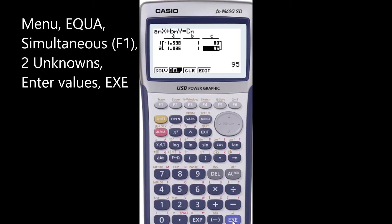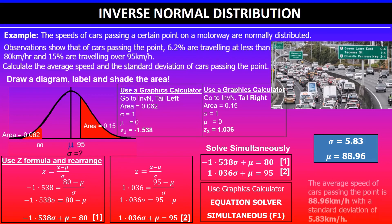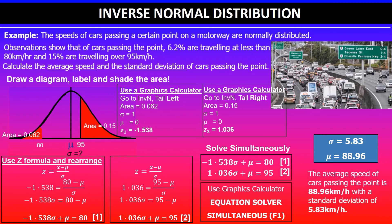Once the values are entered, click Execute to get the results. The X value is your standard deviation, which is 5.83, and the Y value is the mean value, which is 88.96. Write the answer in context: the average speed of cars passing the point is 88.96 kilometers per hour with a standard deviation of 5.83 kilometers per hour.